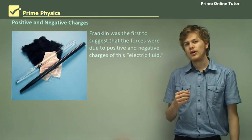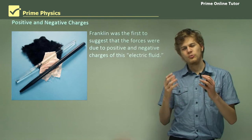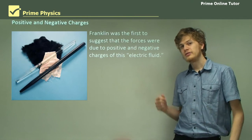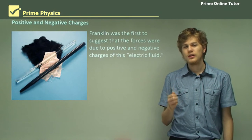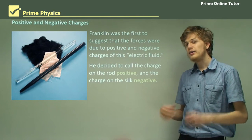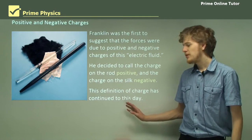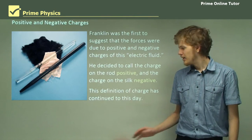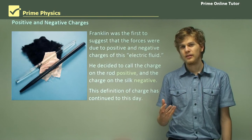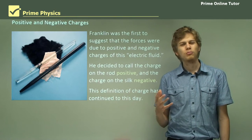Franklin was the first one to suggest that there were positive charges and negative charges. It was known that you could rub a glass rod on a piece of silk and the glass rod would attract stuff, but it wasn't until Benjamin Franklin that he decided the glass rod would have a positive charge and the silk a negative charge. He decided at random to call the rod a positive charge and the silk a negative charge, and in fact this definition of charge has continued to this day. It's the reason we say electrons are negative and protons are positive, instead of the other way around. If Franklin had decided to call the rod negative and the silk positive, then today we'd probably have positively charged electrons and negatively charged protons.